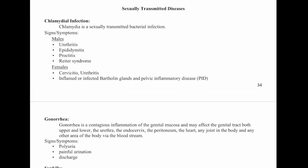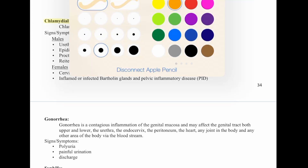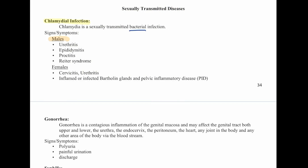Chlamydia is a sexually transmitted bacterial infection. In males: urethritis, epididymitis, proctitis, and Reiter's syndrome. In females: cervicitis, urethritis, inflammation of Bartholin's glands, and pelvic inflammatory disease. Gonorrhea is a contagious inflammation of the genital mucosa that may affect the upper and lower genital tract, urethra, endocervix, peritoneum, heart, and joints via the bloodstream. Signs include polyuria, painful urination, and discharge.